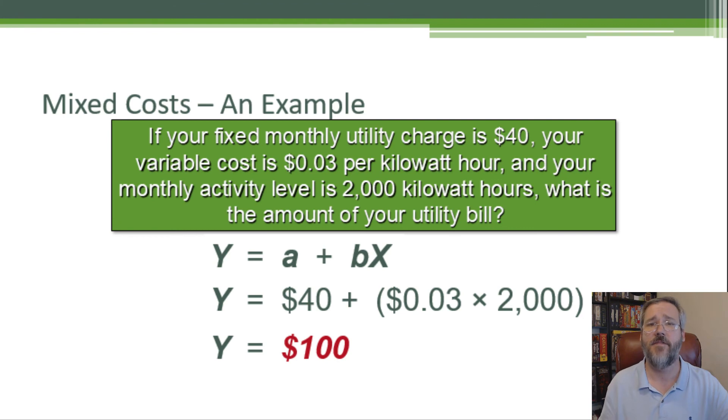Here we have an example of mixed cost. If we have a fixed monthly charge of $40, variable cost of $0.03 per kilowatt hour, and we have a monthly consumption of power of 2,000 kilowatt hours, what is the amount of our total electricity bill? We have a $40 flat fee for the connection plus $0.03 per kilowatt hour used. Our total bill Y equals A, $40, plus $0.03 times 2,000, gives me $40 plus $60, total of $100 for our monthly utility bill. And again, keep this formula in mind, we're going to use it for more than just mixed costs.